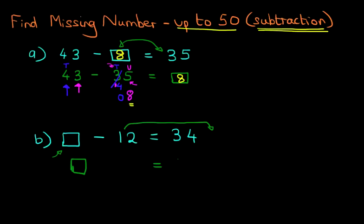We've got the missing number equals 34. And because we're taking the 12 across, it was minus. This time it becomes plus 12. On the other side, it becomes 12. So it's missing number equals 34 plus 12.